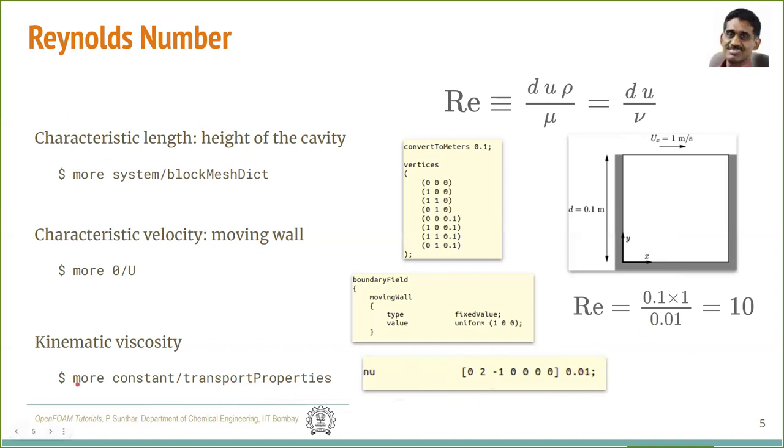Kinematic viscosity here is obtained from, can be visible in this file, transportProperties under the constant directory. It has a value of 0.01. Therefore, the Reynolds number in the default tutorial is 10.